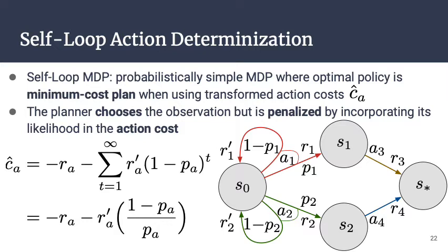Because our prior planners are deterministic and don't support averaging over many possible outcomes, we use action determinization — reducing the problem to an approximate deterministic problem. We use self-loop determinization, inspired by the self-loop MDP, a simple MDP where actions either take you to a new state or return you to the prior state. You can show that this reduces to a minimum-cost planning problem under appropriately transformed action costs, and deterministic planning will produce the optimal policy. In our work, we let the planner choose the observation it will have, but penalize according to this transformed action cost.